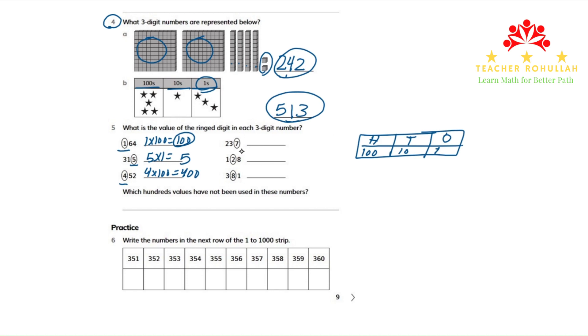The fourth number is 237. And the ringed digit is 7. 7 is in the 1s place. So we will multiply it by 1. 7 times 1 is 7.